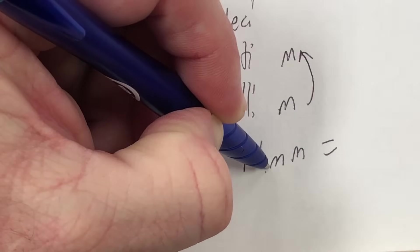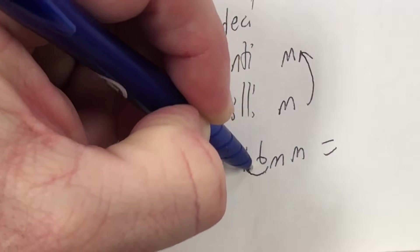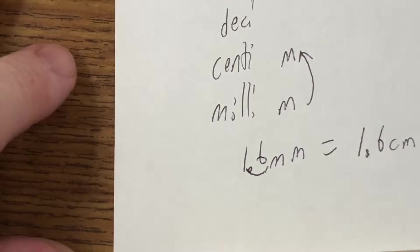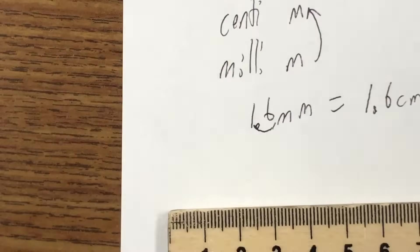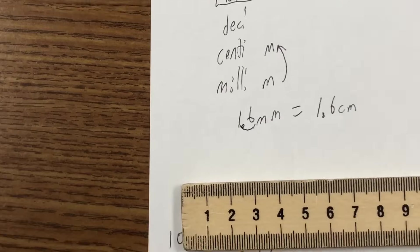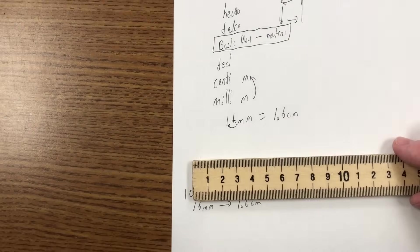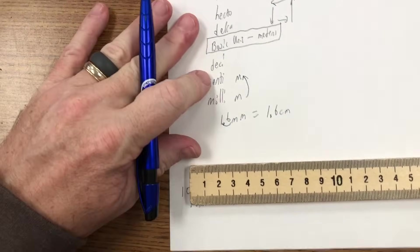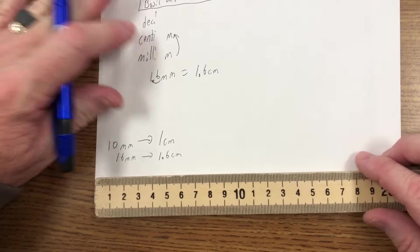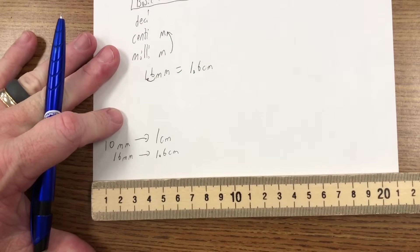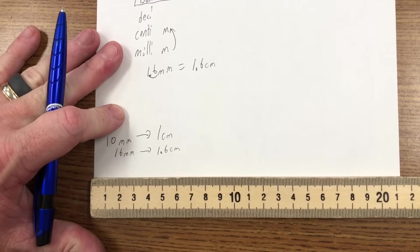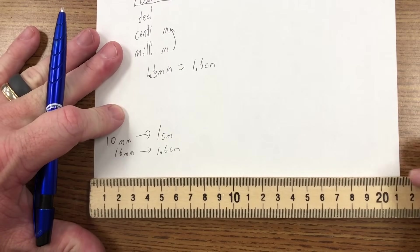Which is why we did this with our measurements: millimeter to centimeter — we went up the chart, so 16 millimeters is equal to moving the decimal one place to the left, giving us 1.6 centimeters. Now let's measure the entire piece of paper side to side.